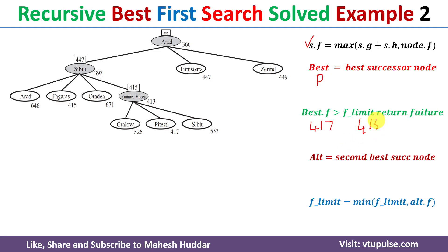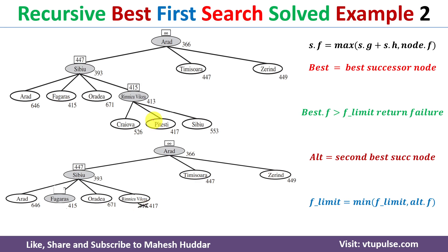Since 417 > 415, the algorithm returns failure. Upon returning failure, Rimnicu Vilcea's stored f value is updated from 413 to 417 (the best_f), and this subtree is forgotten. The search tree now shows the four successors of Sibiu with Rimnicu Vilcea's value updated to 417.